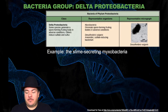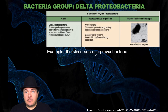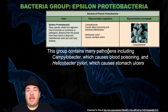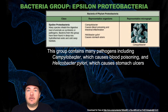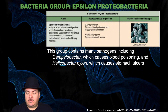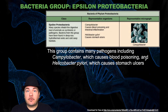Next is the delta proteobacteria, which includes the slime-secreting myxobacteria. Then we have the epsilon proteobacteria, which contains many pathogens including Campylobacter, which causes blood poisoning, and Helicobacter pylori, which causes stomach ulcers. That covers the proteobacteria phylum.